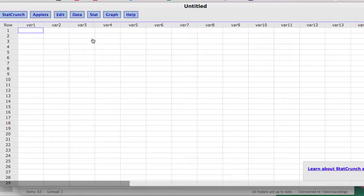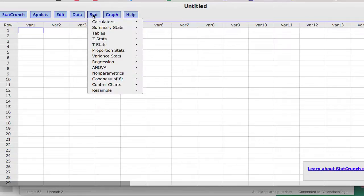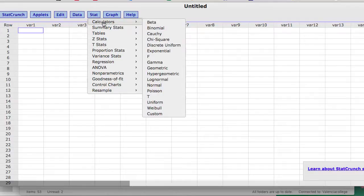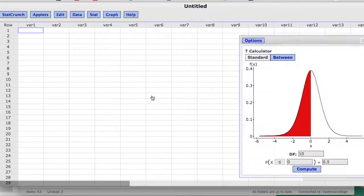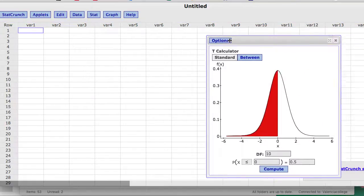So let me bring up StatCrunch real quick. And what we'll do in this case, we'll go to Stat. And then we will go to Calculator. And then what we're going to do in this case is use the t-calculator. So I'm going to bring up the t-calculator.